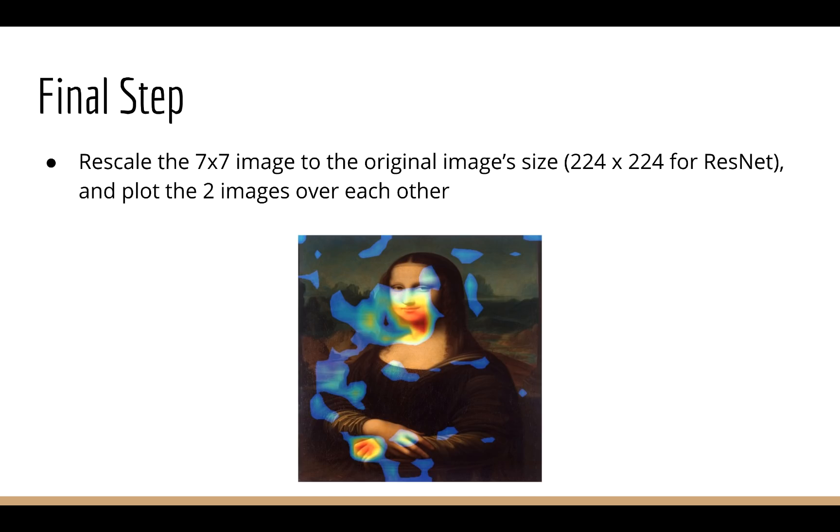So what do we do with this 7x7 image? Well, in order to overlay this image on the original, they have to be the same size. So we can use SciPy, for example, to upsample the image so that it's the same size as the original and then overlay the two images together. And that's how you draw a class activation map.